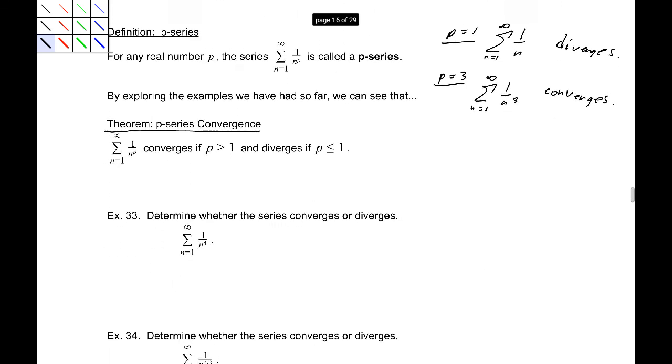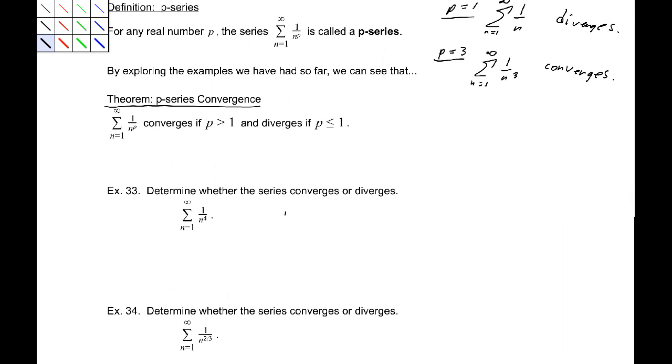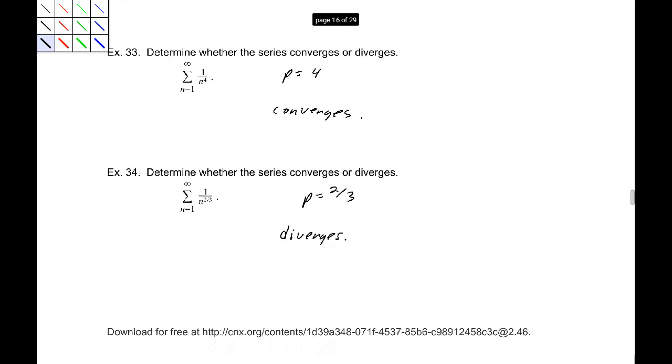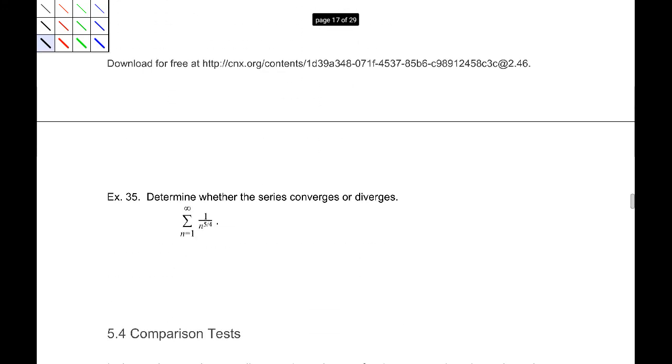So, first, example 33, determine if it converges or diverges. Well, here, p equals 4. That's greater than 1. It converges. 34, p equals 2 thirds. That is less than or equal to 1. Diverges. Simple enough. Just look for the value of p. If p here, p equals 5 fourths. 5 fourths is greater than 1, so this converges.